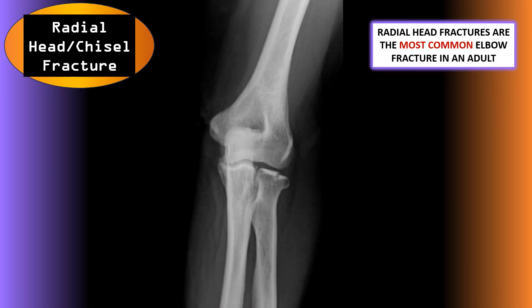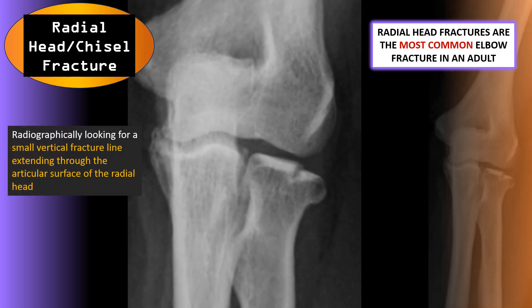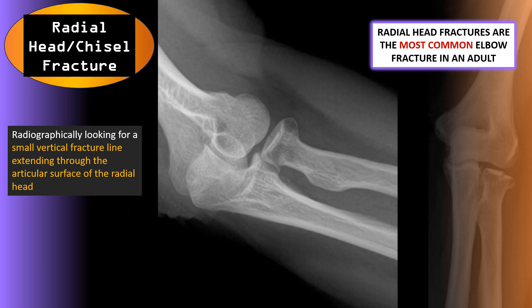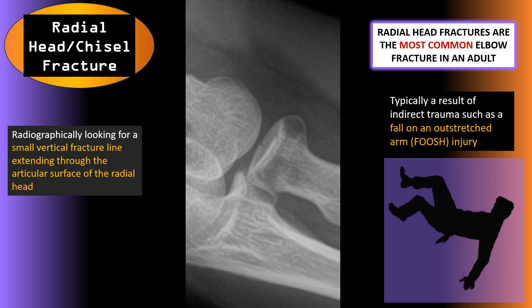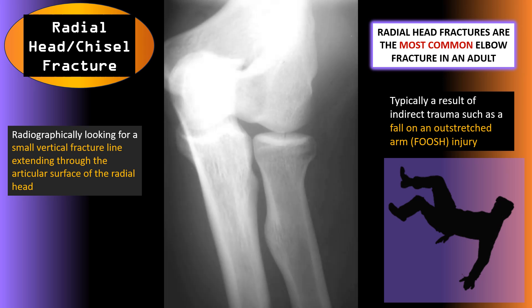Radial head fractures are the most common elbow fracture in an adult. Radiographically, we're looking for a small vertical fracture line extending through the articular surface of the radial head. These are usually a result of indirect trauma such as a fall on an outstretched arm — a FOOSH injury. These fractures are really subtle and very difficult to see; here we can just notice a small radial lucency, and that is the fracture. Sometimes these fractures are only visible on one projection, so make sure you're looking at frontal, lateral, and oblique projections.